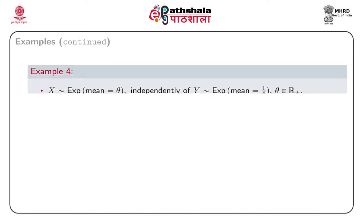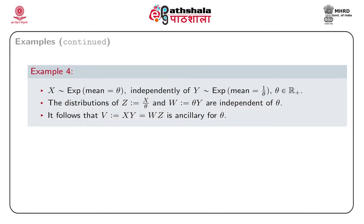Example 4: Let x and y be independently distributed random variables such that x follows Exponential with mean θ and y follows Exponential with mean 1/θ. Then the distributions of z = x/θ and w = θy are independent of θ. If we define v = xy = zw, then the distribution of v is independent of θ, and thus v is ancillary for θ.